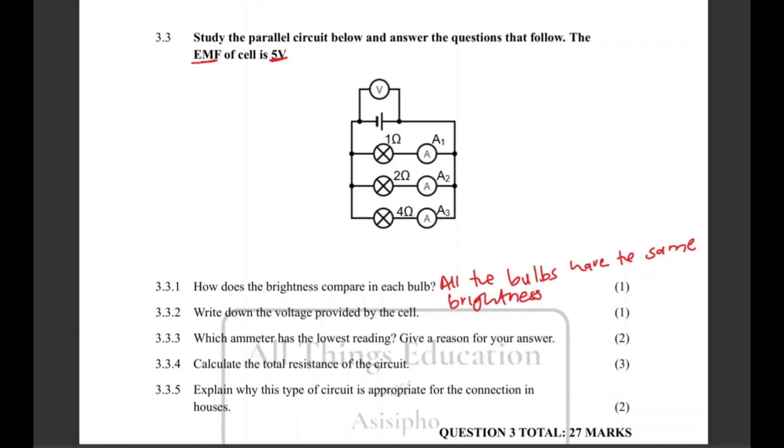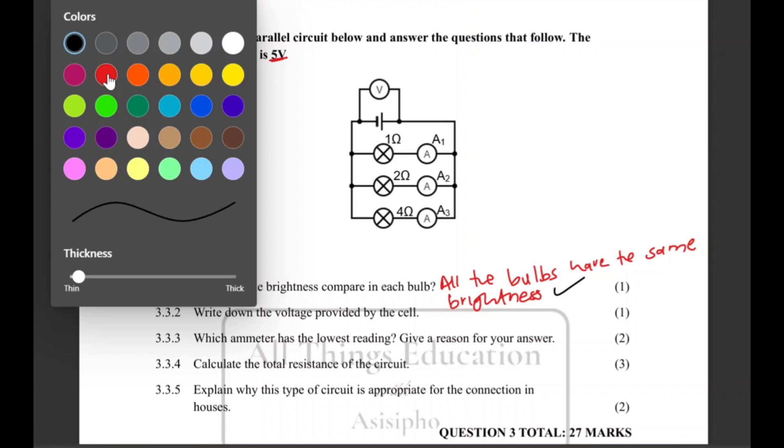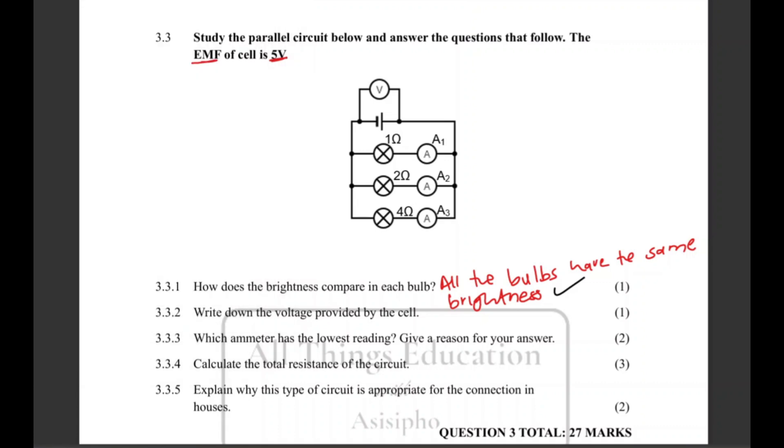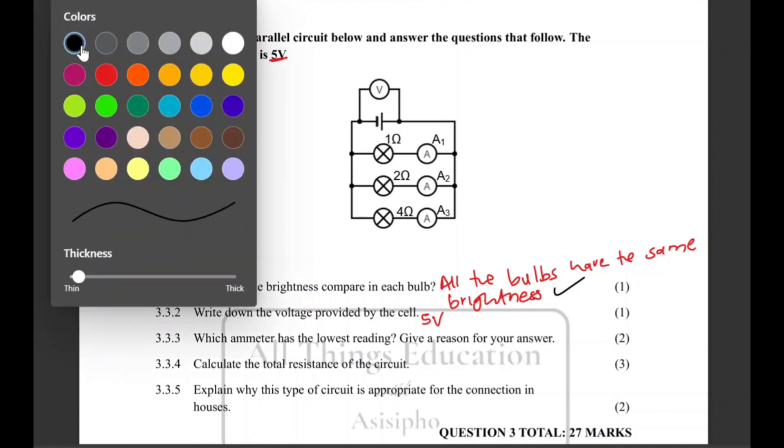Write down the voltage provided by the cell. The voltage provided by the cell is given to us, so that will be 5V, one mark for that. Easy piece of stuff.